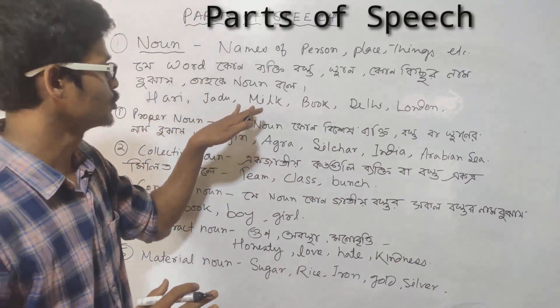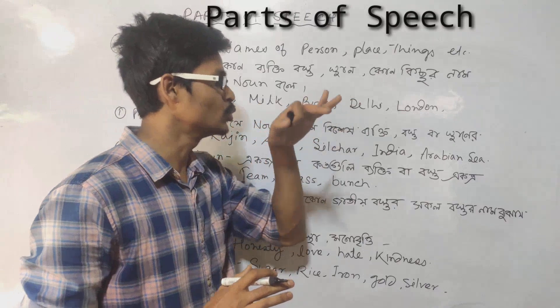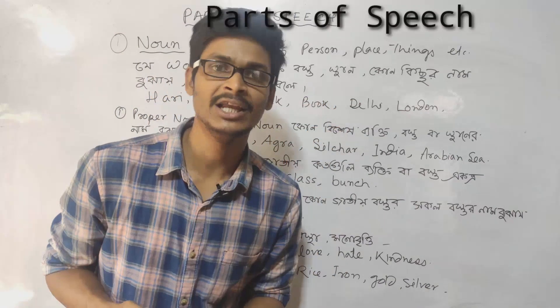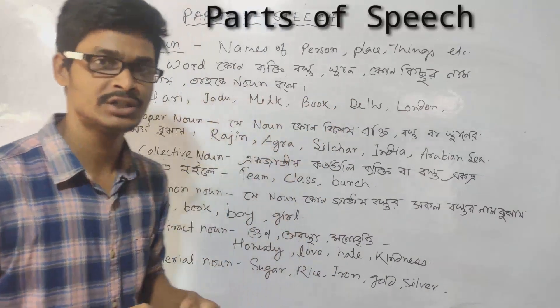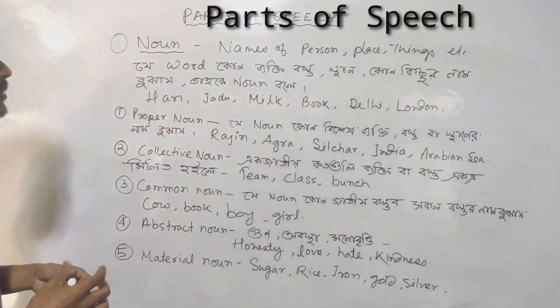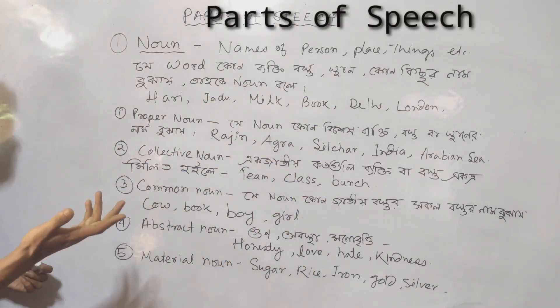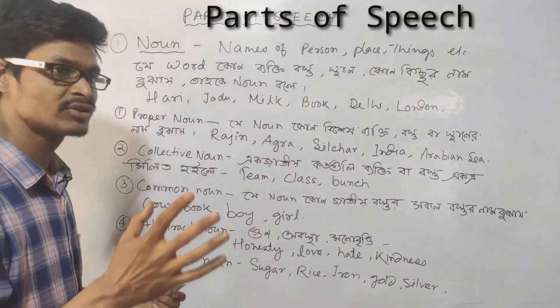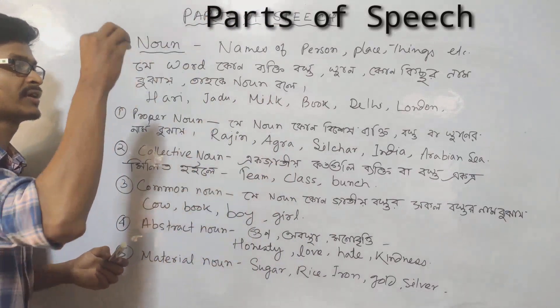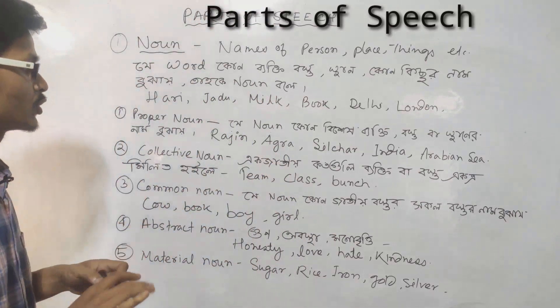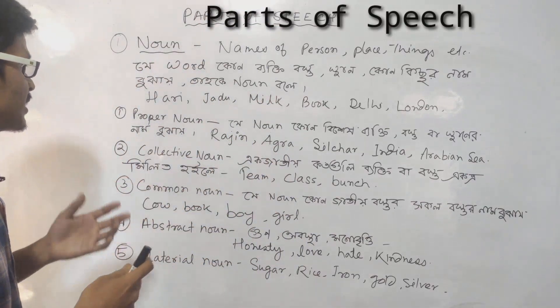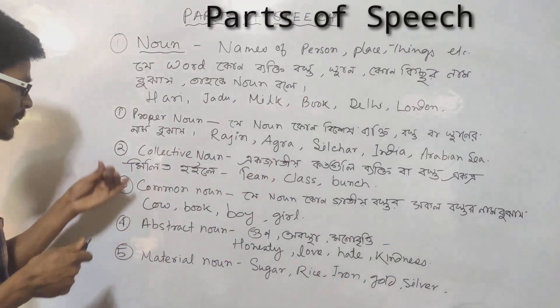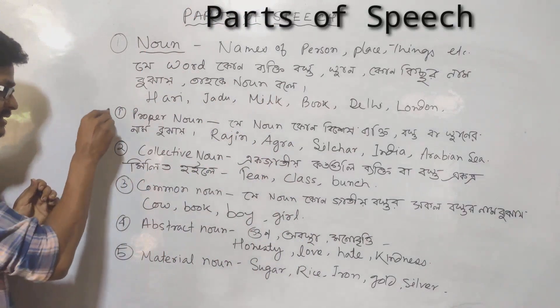Examples of nouns: milk, book, Delhi, London, Sylhet — all of these are nouns. Any word that is the name of something is a noun. A noun has several parts.